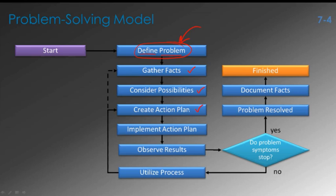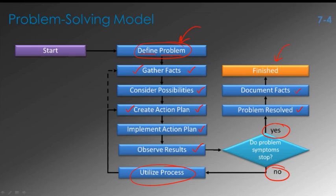What are we going to do to try and solve the problem? We implement that, and then we carefully observe the results. If the symptoms have stopped, then we've solved the problem. We'll want to document what we did, and then go to the local pub and celebrate. If the problems didn't stop, then we need to go back in and utilize this process, either starting over with gathering facts or jumping right to the creation of another action plan.